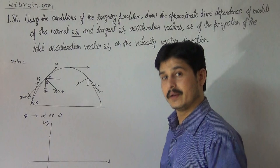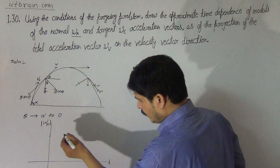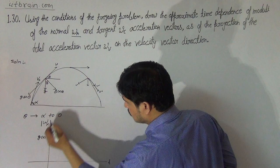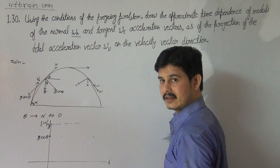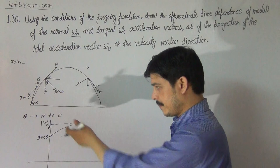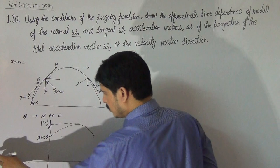So the graph of normal acceleration versus time starts from g·cos(alpha), rises to a maximum value of g at the top point (at half the time of flight), and then decreases back to g·cos(alpha) at the end. This gives the upper part of a cosine curve — a symmetric arch shape between the two endpoints.